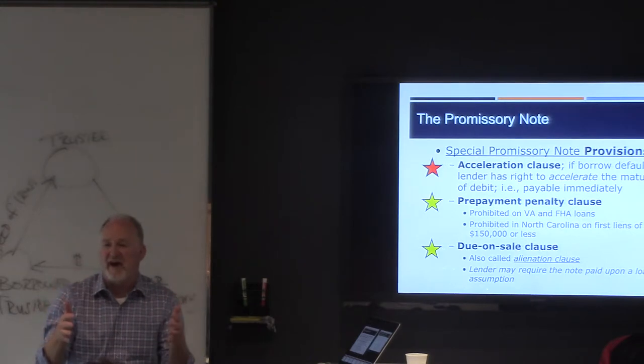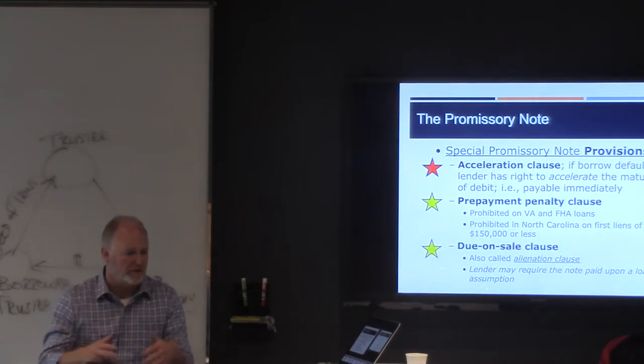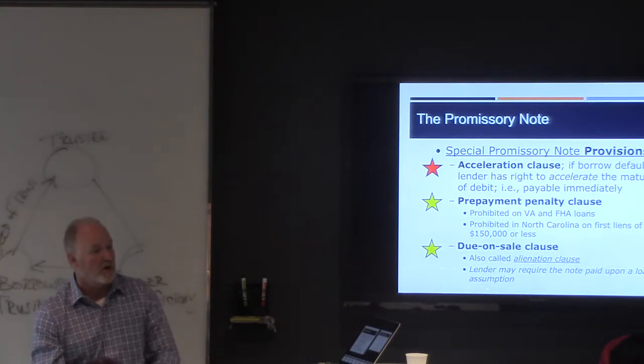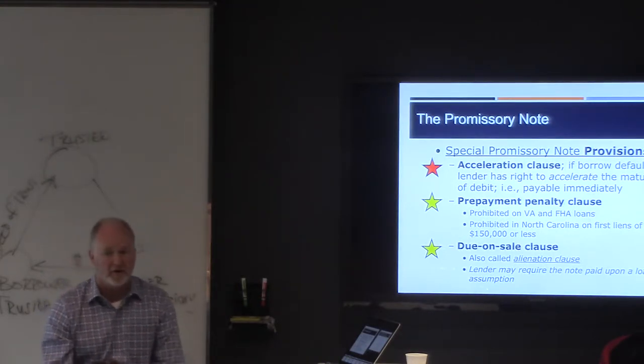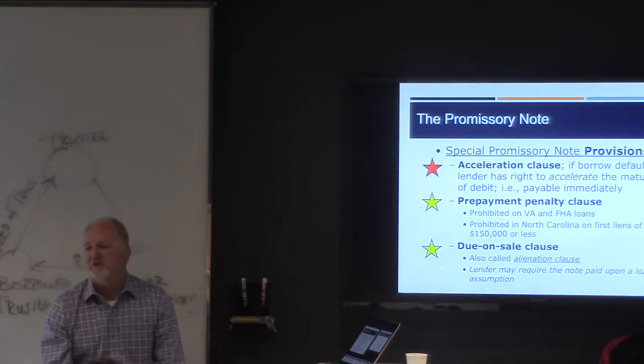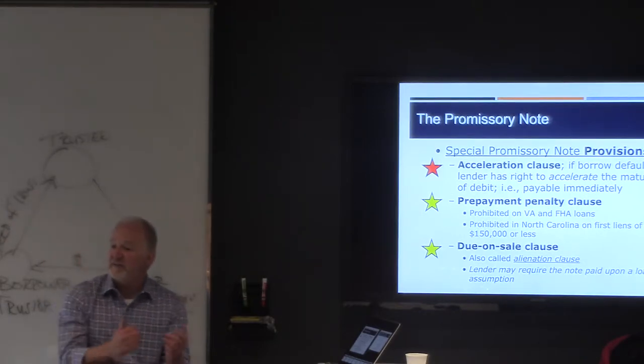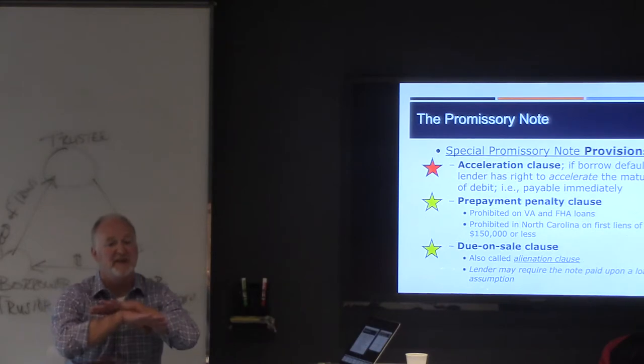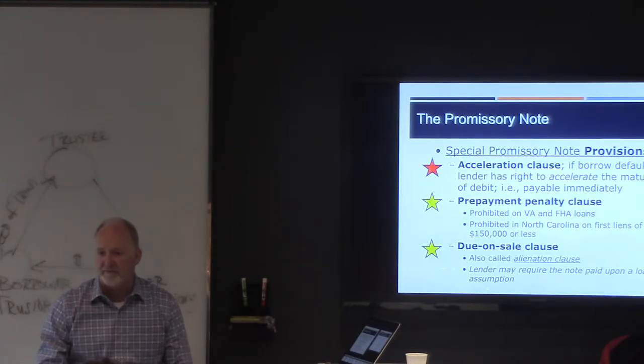By the way, you have to qualify. I mean, somebody just can't walk in on the street and take over. I'd still have to qualify with a bank, but I could take over his loan because it doesn't have a due on sale clause. Due on sale alienation. In the event of a sale, the bank calls the whole loan due, which in essence makes the loan unassumable.